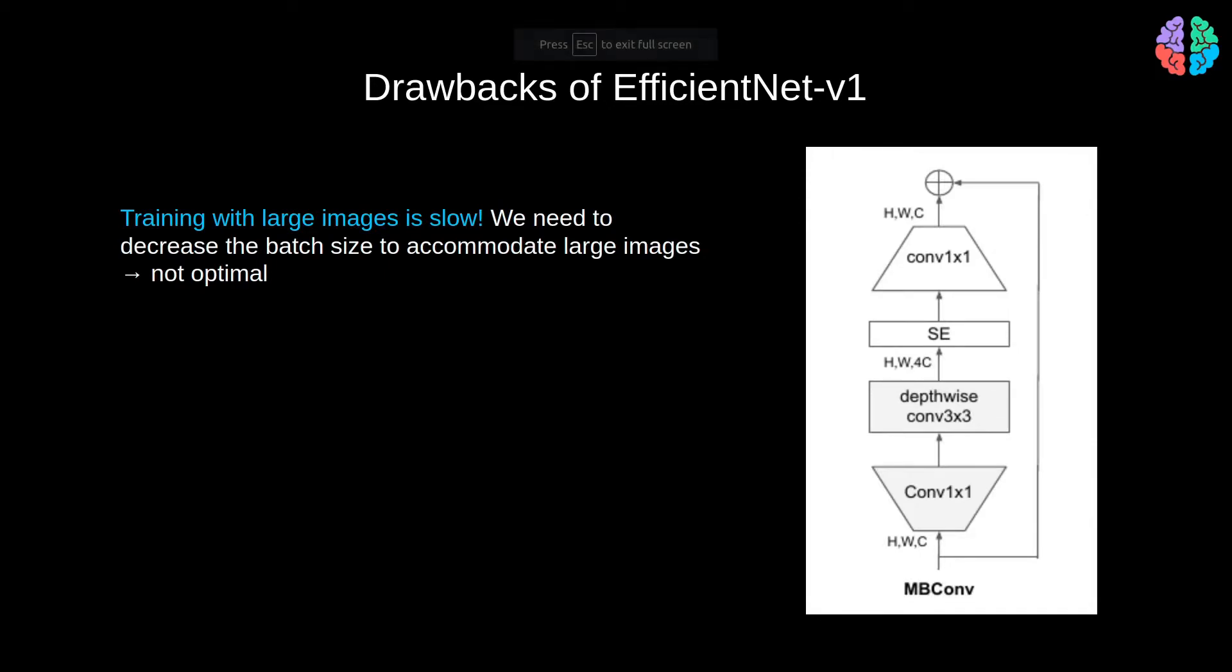One of the main drawbacks of training with large images is that as the image size increases, training becomes terribly slow. In order to accommodate large images on the GPU, we need to decrease the batch size. But as we all know, batch norm doesn't like small batches, training becomes suboptimal with small batches.